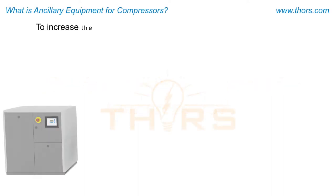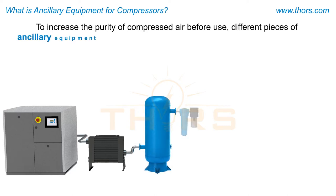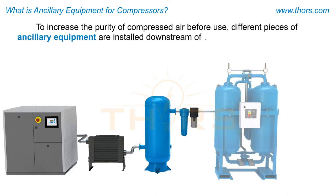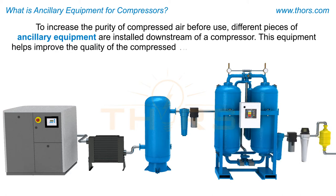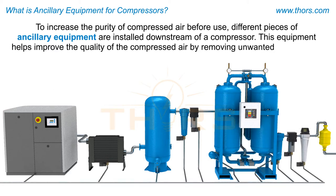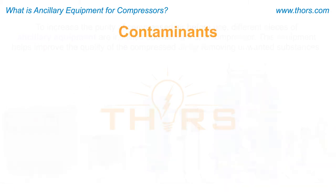To increase the purity of compressed air before use, different pieces of ancillary equipment are installed downstream of a compressor. This equipment helps improve the quality of the compressed air by removing unwanted substances. In order to be used, compressed air needs to be treated for the various contaminants found in it.